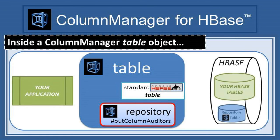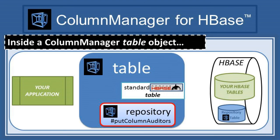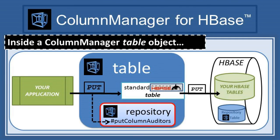As standard admin or table API methods are invoked by your end-user application, repository methods may also be automatically invoked in the background, to maintain any metadata that you've configured Column Manager to keep track of. For example, if you successfully invoke the table put method against one of your user tables in HBase, then, if you've configured Column Manager to perform column auditing, your special table object also automatically invokes the appropriate method of its repository object, to feed column metadata to Column Manager's repository table.